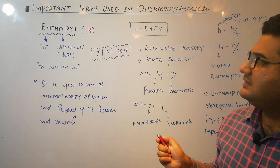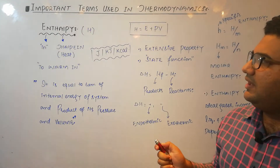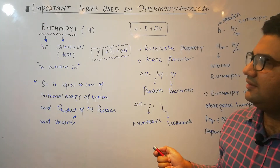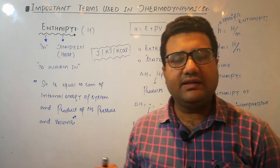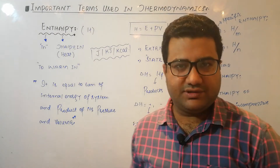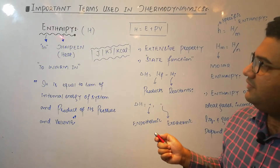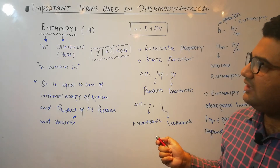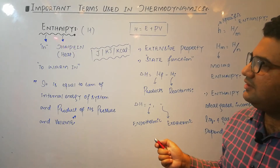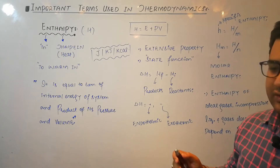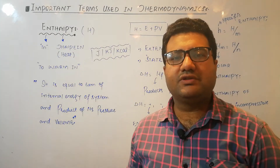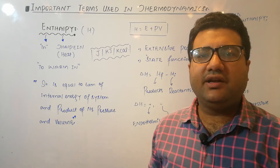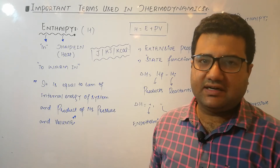Enthalpy, symbol H. In Greek, the word 'en' stands for 'in', while 'thalpy' is taken from 'thalpine', which means heat. So the literal meaning of enthalpy is 'to warm in' or 'to introduce heat in the system'. Enthalpy is actually the total heat content of a system.